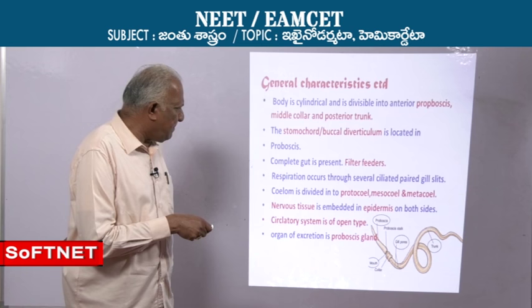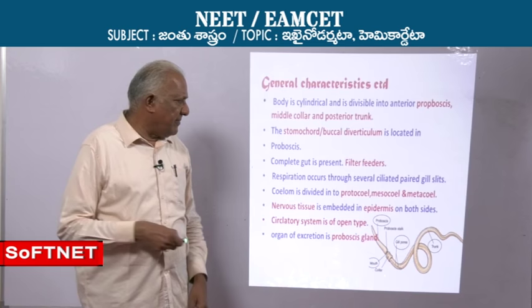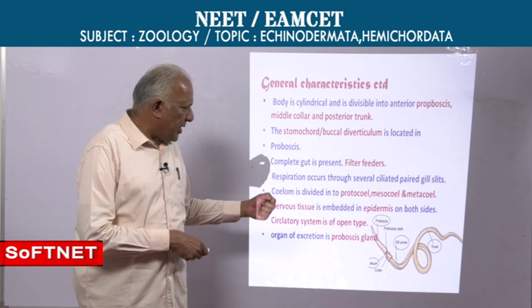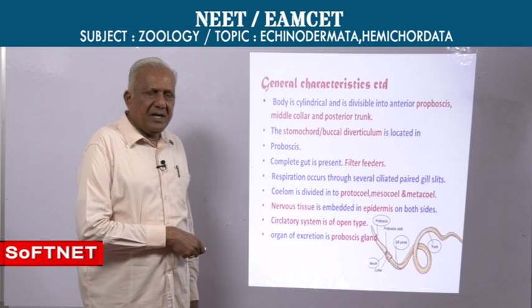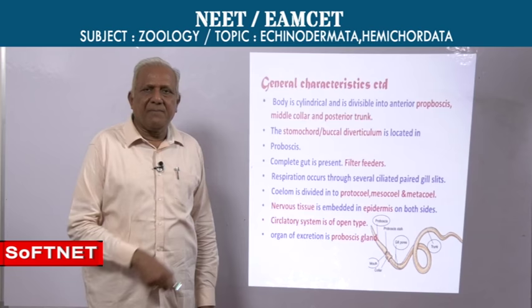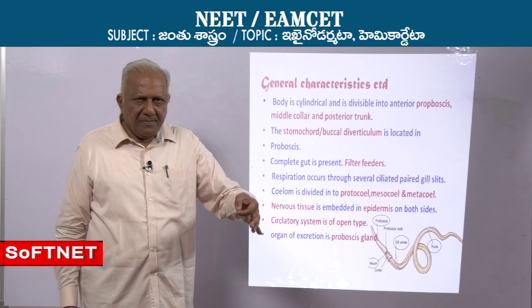Since the body is divided into proboscis, collar, and trunk, the body cavity in the proboscis is called protocoel, in the collar it is called mesocoel, and in the trunk it is called metacoel. Body cavity is divisible into anterior protocoel, median mesocoel, and posterior metacoel.